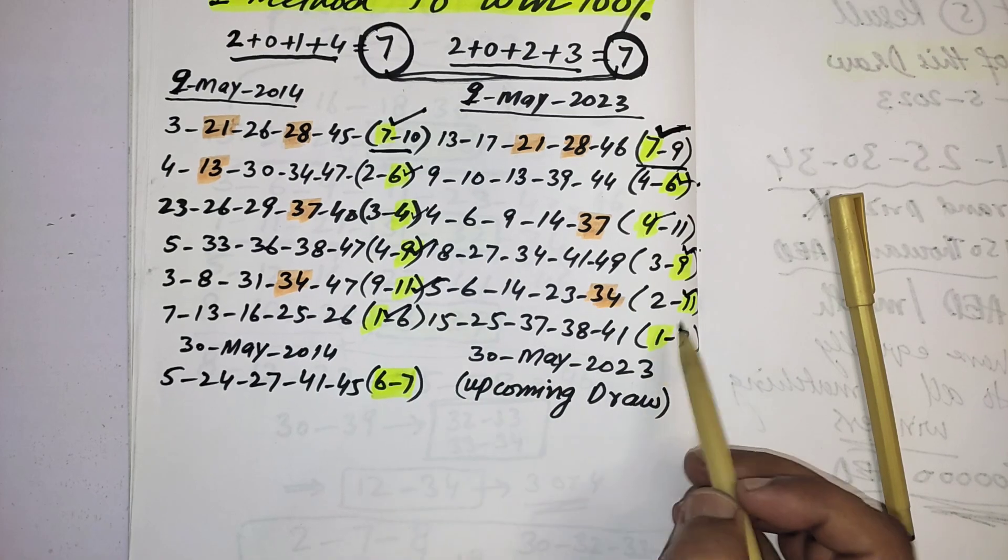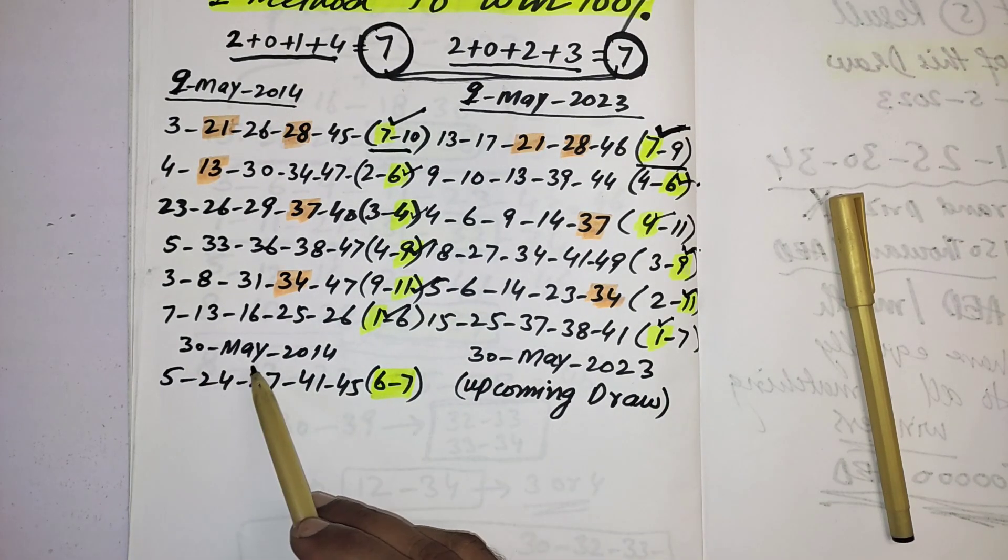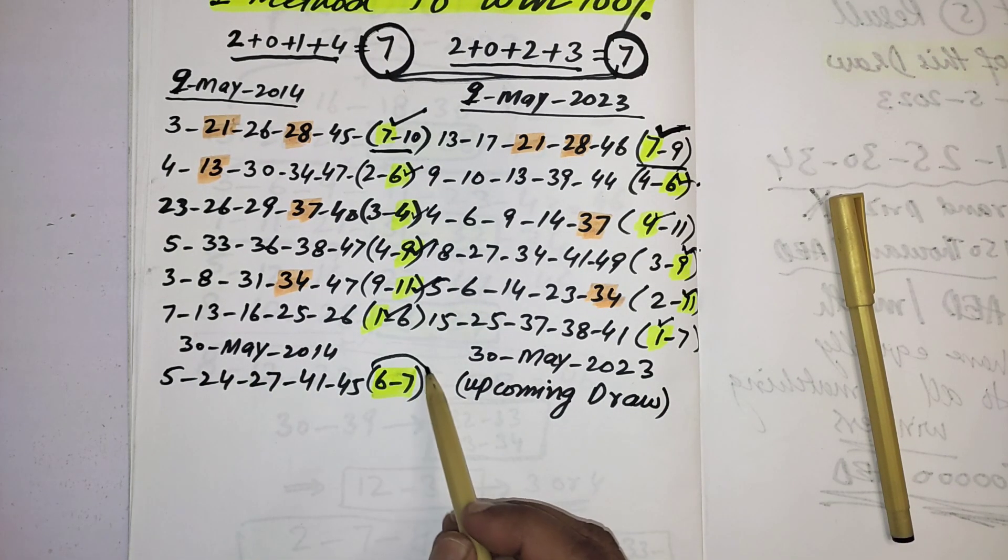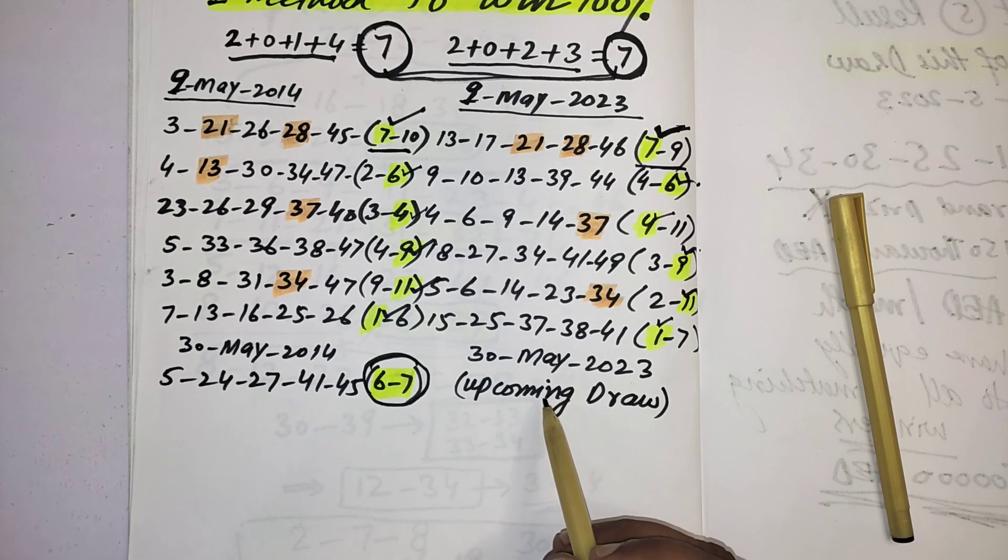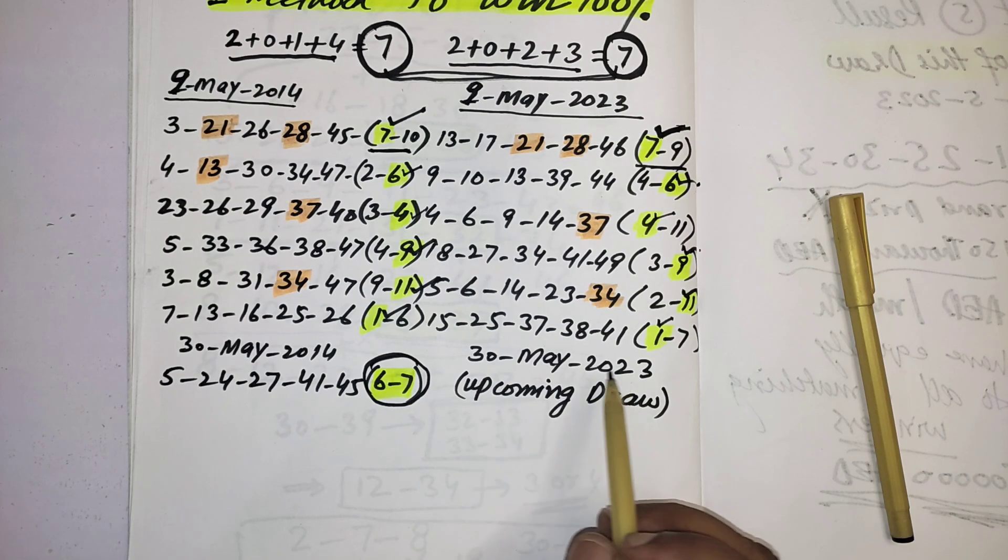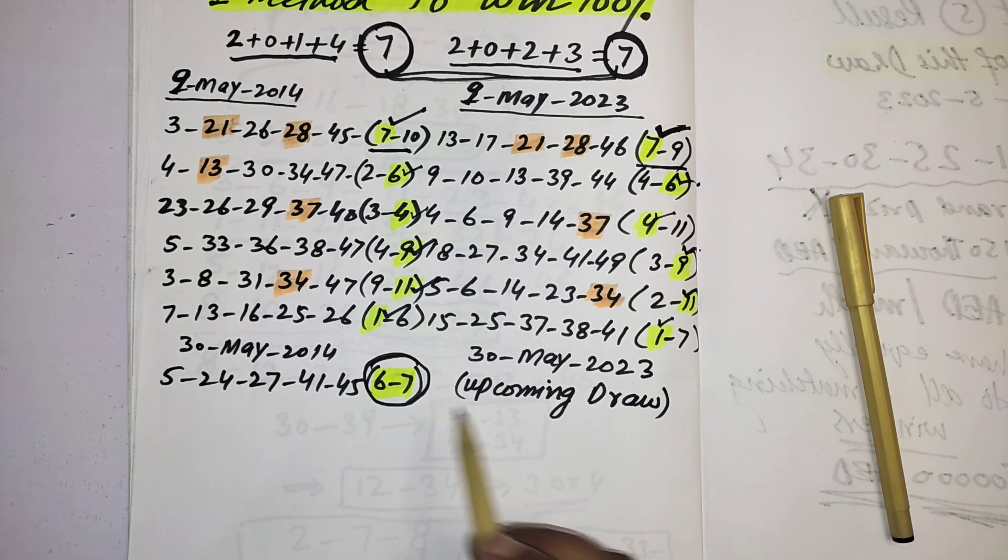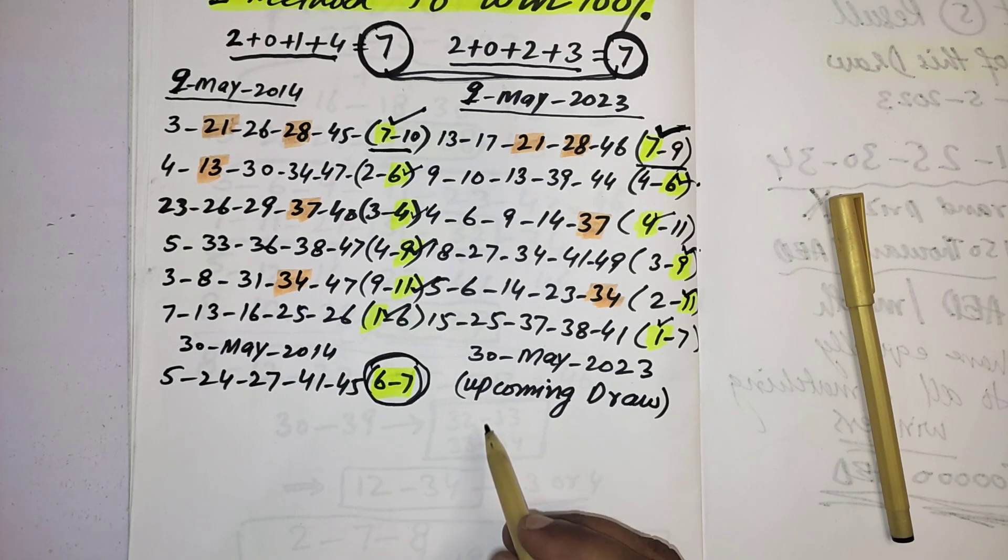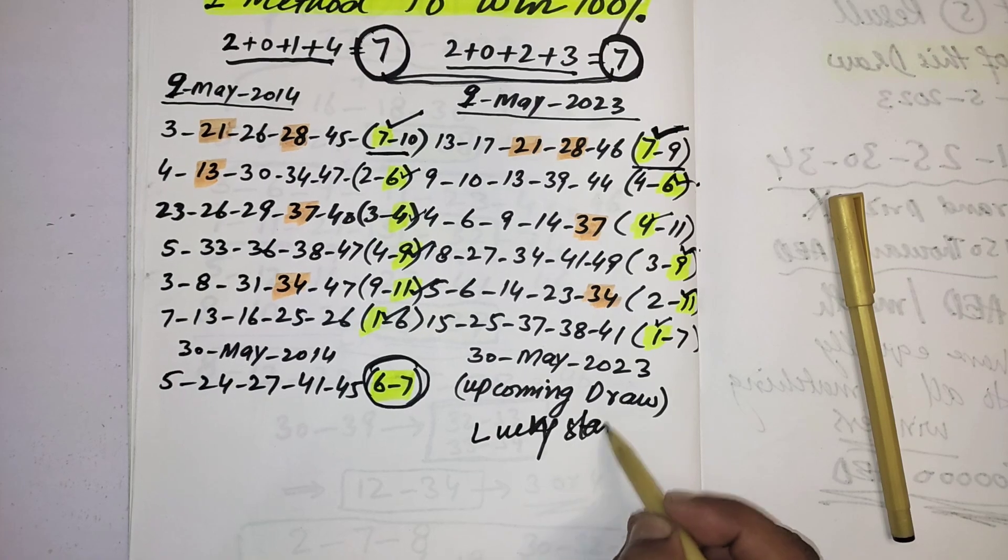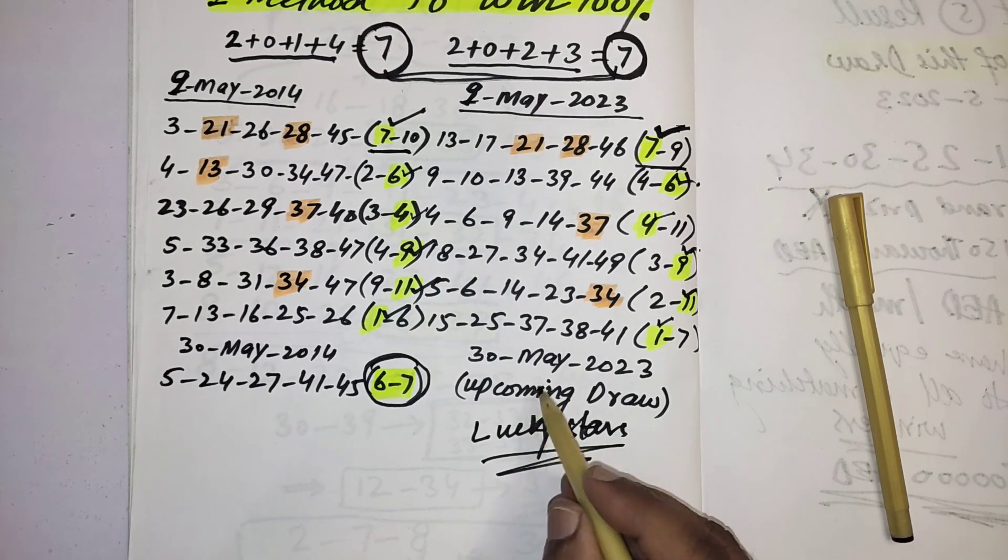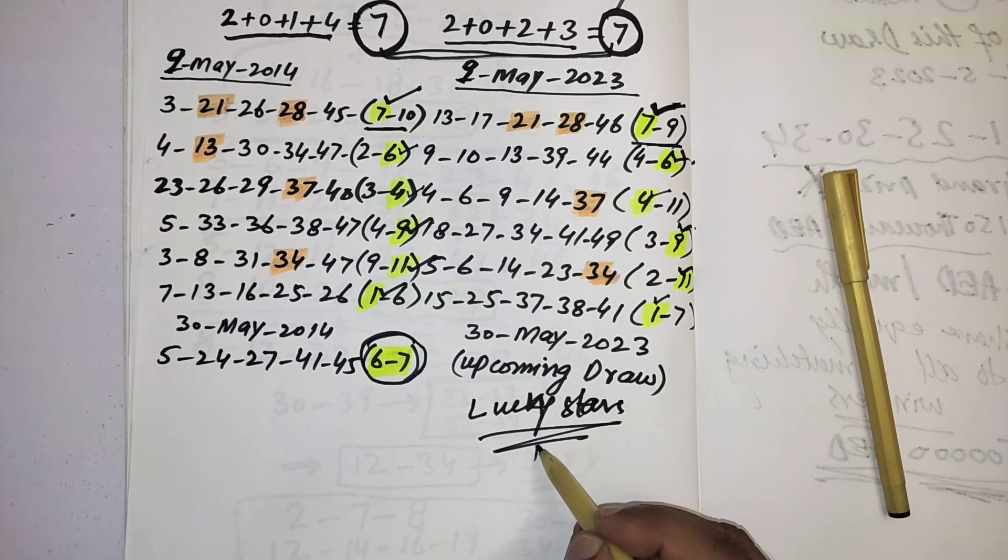And this is the last draw, 13th May 2014, lucky star numbers last game six. And the same, here is now upcoming draw 13th May 2023. According to this attraction, these two numbers you can select one number or these two both numbers as the lucky star numbers for this draw: six and seven.